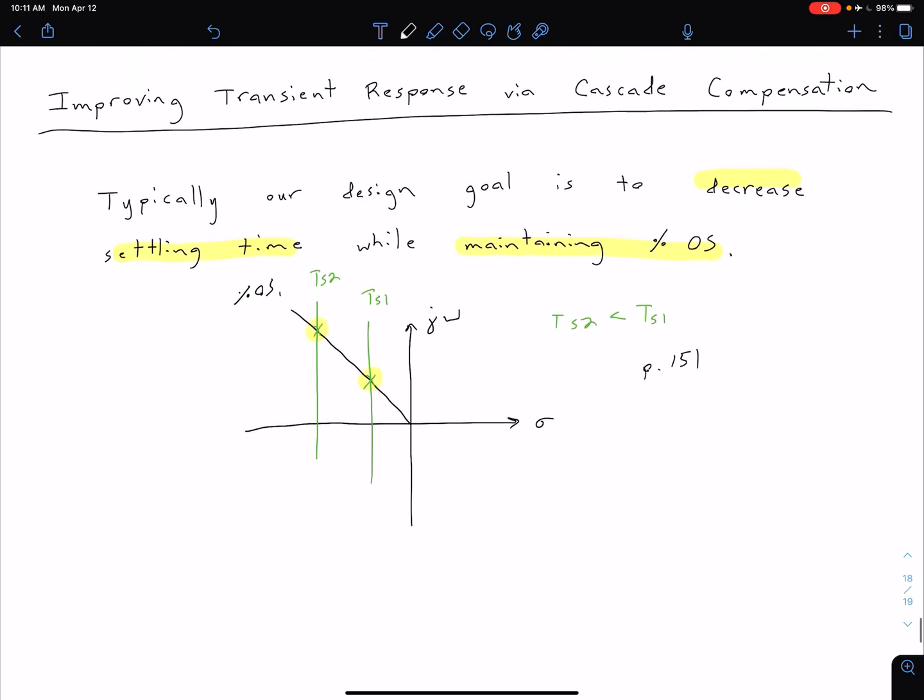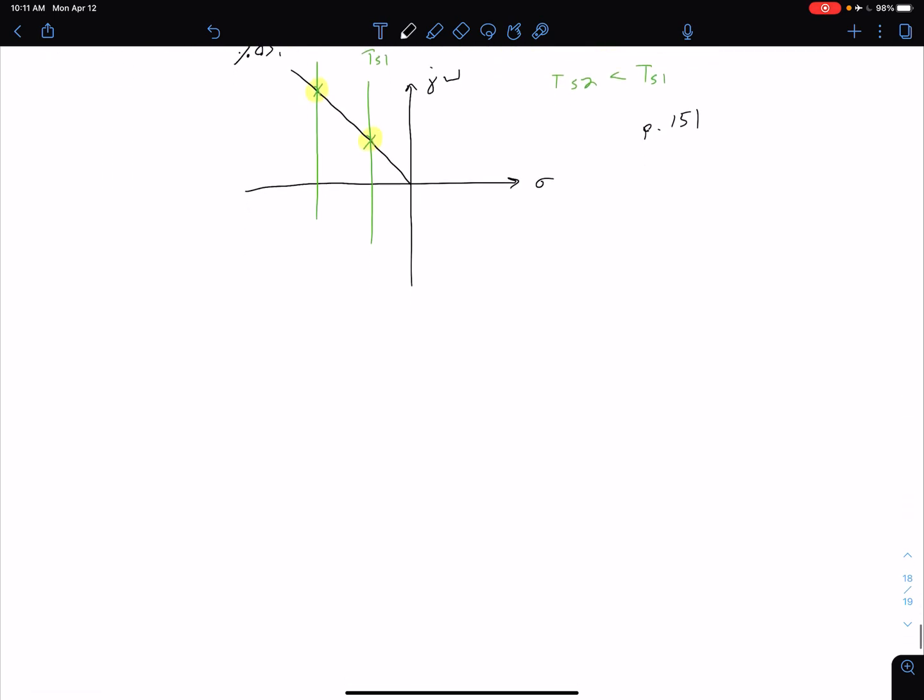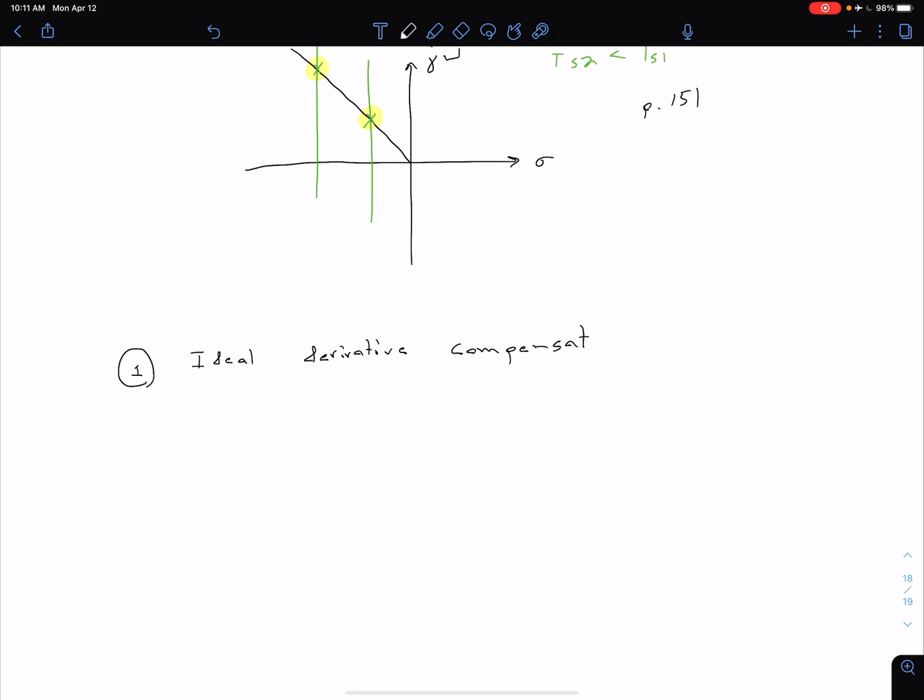We're going to be looking at two methods to achieve this transient response improvement with cascade compensation. The first is with an ideal derivative compensation, or ideal derivative compensator. In this case, we're going to have a proportional signal and a derivative signal, just like paralleling to what we did with our integral signal. We still need that proportional signal as well, so we're going to have proportional plus derivative. We're going to call this a PD controller. A couple things to note about this ideal derivative compensation: just like with our ideal integral compensation, this is going to be implemented using active components.